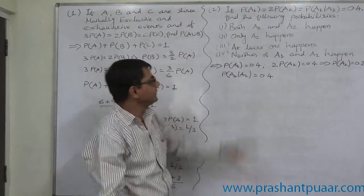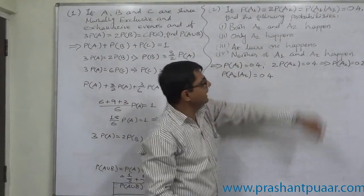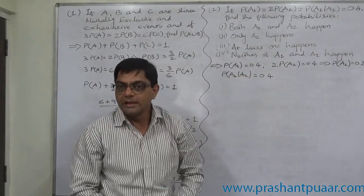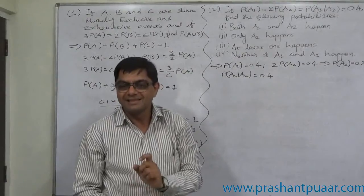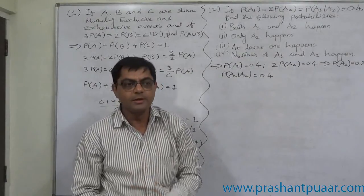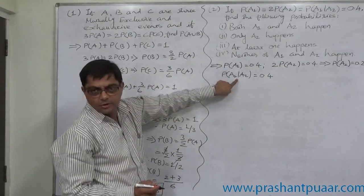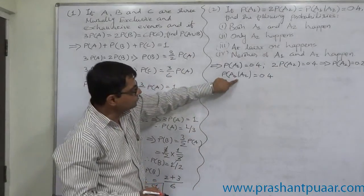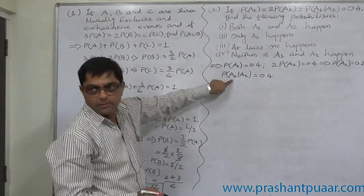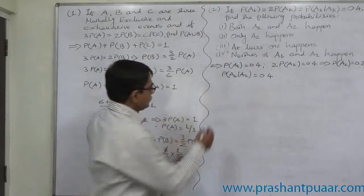Now, you can find any of these four. Both A1 and A2 happen means this is the case of calculation of probability of intersection. And to find out the probability of intersection, we have to use conditional probability of A1 given A2.